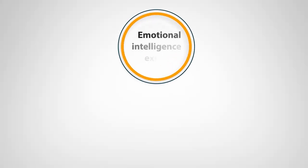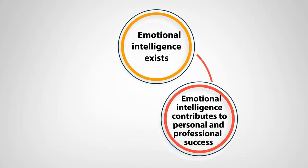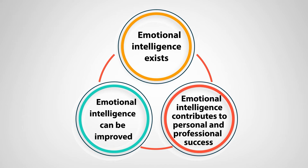In another book, Daniel Goleman further explored how workplace performance relates to interpersonal relationships. After Goleman's model, many books on emotional intelligence shared common agreements: first, emotional intelligence exists; second, it contributes to personal and professional success; third, emotional intelligence can be improved. At the workplace, more developed the emotional intelligence, more success is achieved, as a good understanding of others' emotions is required for professional success.